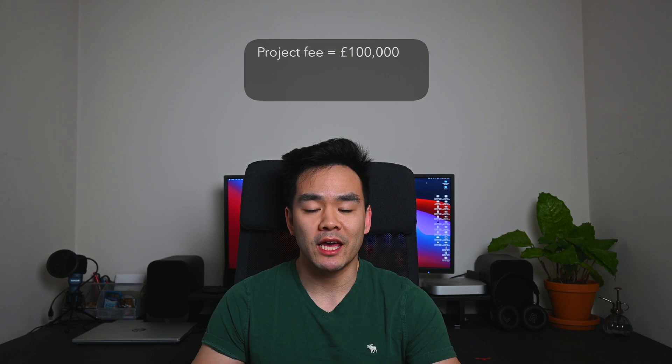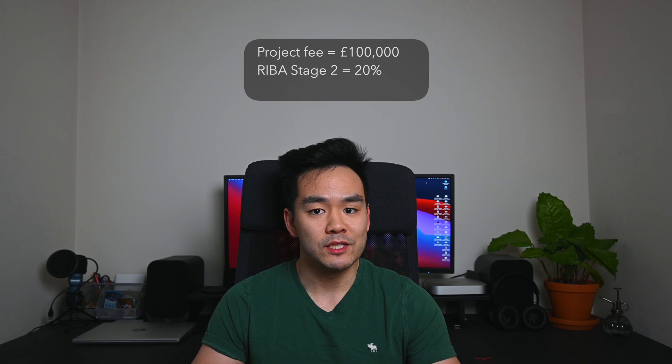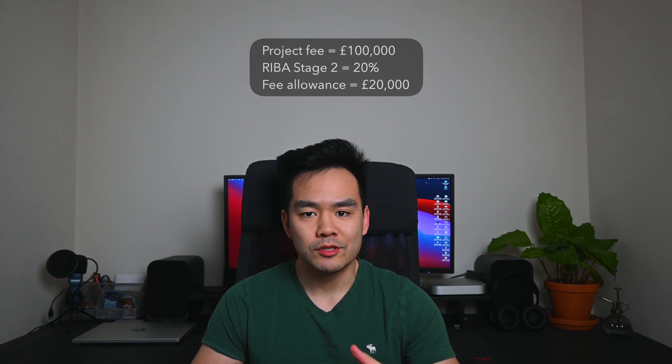So let's say you have a project fee of £100,000. At stage 2 with a fee percentage of 20%, that means you can spend £20,000 at that stage. Let's continue this example: at stage 2 you're a senior engineer and you've also got a graduate engineer working for you. The graduate is charged at £50 an hour and you're charged at £75 an hour.